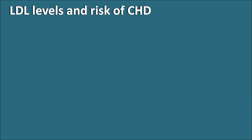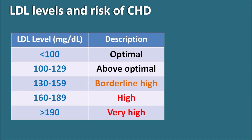LDL levels less than 100 mg/dL are called optimal. Levels of 100 to 129 are above optimal, and in this range we need to control lipid intake. Levels of 130 to 159 are borderline high, requiring diet control and lifestyle modifications like exercise and reducing other risk factors. Levels of 160 to 189 are high, requiring drug therapy to be started. Levels greater than 190 mg/dL are very high, where monotherapy is insufficient and multiple drug therapy is needed to control LDL to an optimal range.